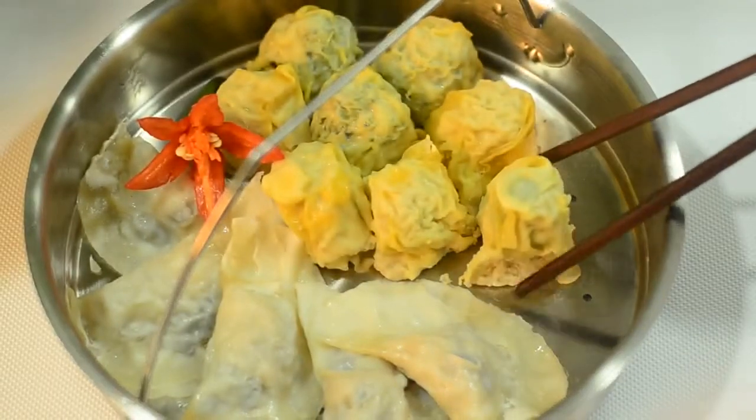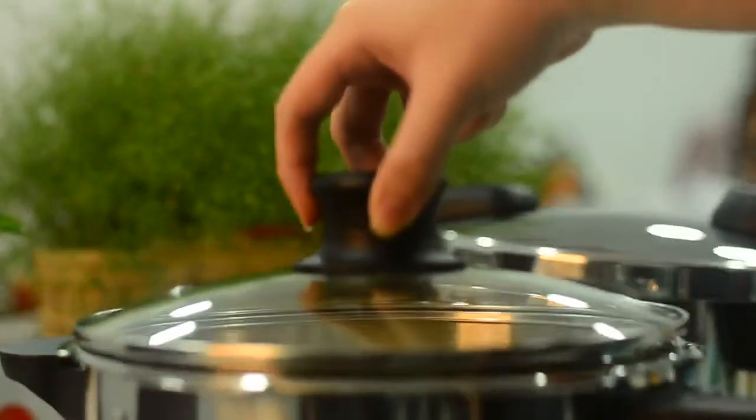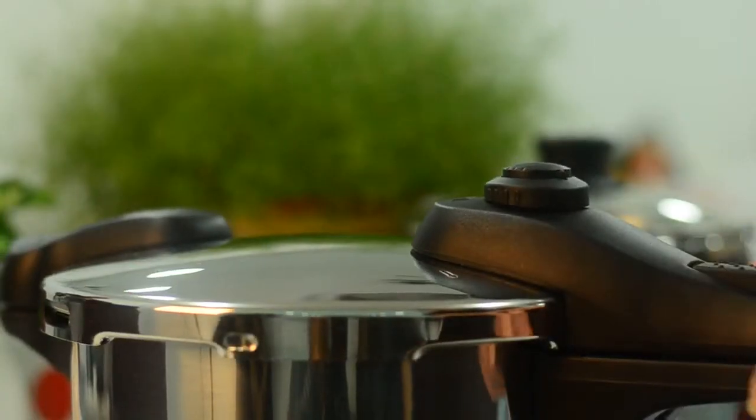Once the water has been poured in, put the dumplings in the steamer rack and place it on the steamer rack stand. For steaming, you can either use the glass lid or the pressure cooker lid.